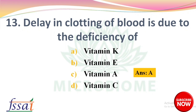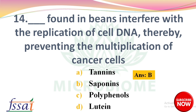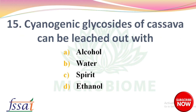Next question: dash found in beans interferes with the replication of cell DNA, thereby preventing the multiplication of cancer cells — options: tannins, saponins, polyphenols, lutein. The right answer is option B, saponins. Next, cyanogenic glycosides of cassava can be leached out with — options: alcohol, water, ethanol. The right answer is option B, water.